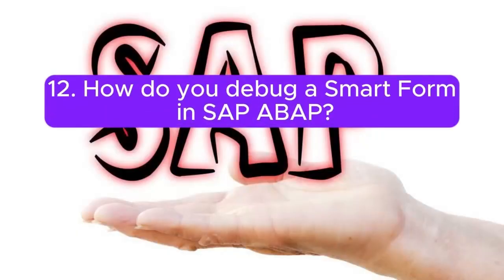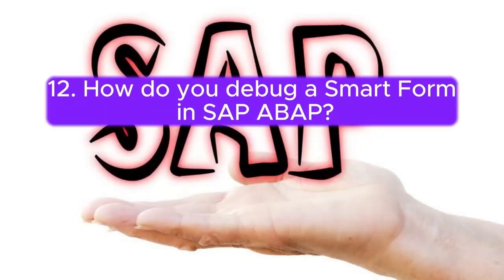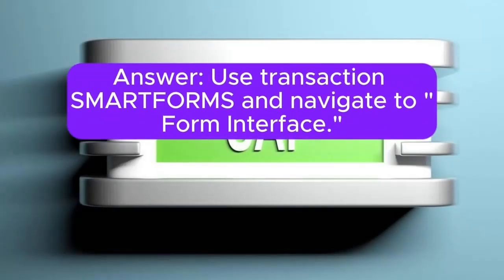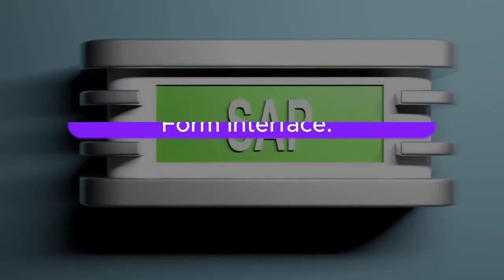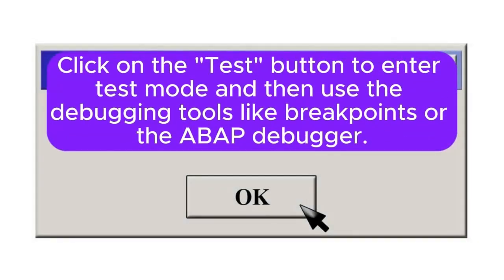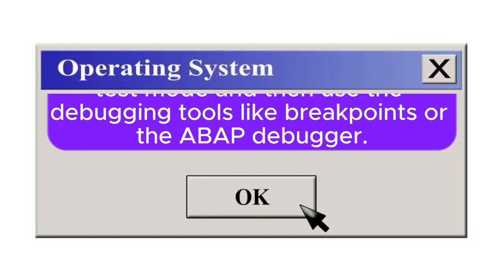12. How do you debug a SmartForm in SAP ABAP? Answer: Use transaction SmartForms and navigate to Form Interface. Click on the Test button to enter test mode, and then use the debugging tools like Breakpoints or the ABAP debugger.